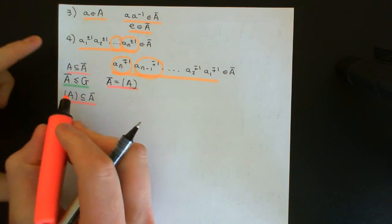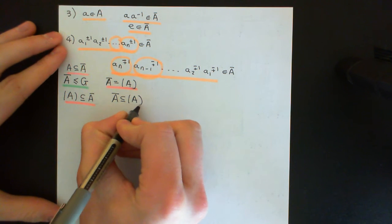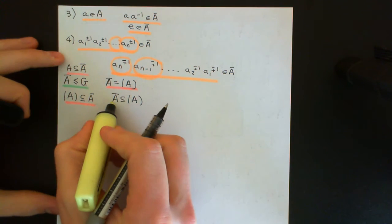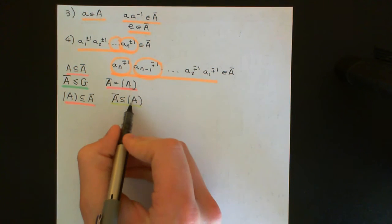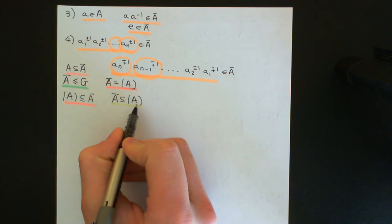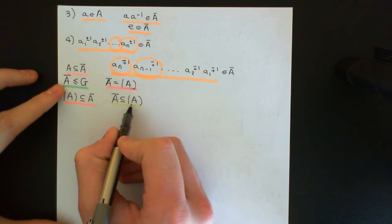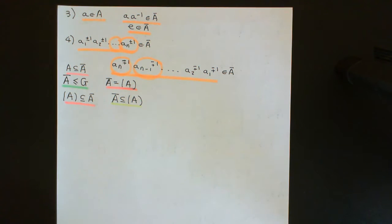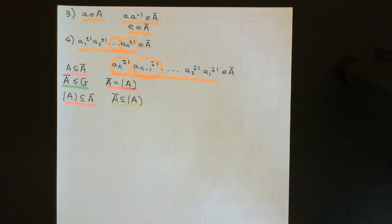But it's also very easy to show containment the other way round. It's also going to be the case that Ā is going to be contained in the subgroup of G generated by A. The reason is just to look at the definition of Ā: it's the elements of the group G that you can get by taking finite length products of elements of the set A and their inverses. This subgroup completely contains the set A, so it's going to also have to contain all of the inverses of A because it must be closed under inverses. Therefore it's going to have to contain all finite products of elements of A and their inverses, because it's closed under multiplication. So indeed it's going to have to contain every single element in Ā, meaning Ā is contained in the subgroup of G generated by A.